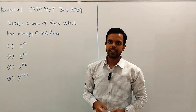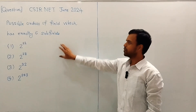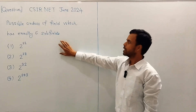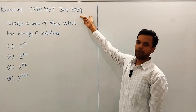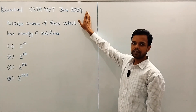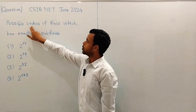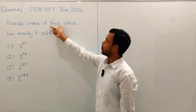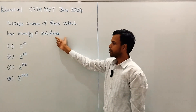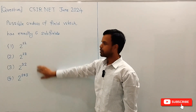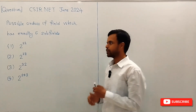Hello everyone, I am Aakash. In this video, I will discuss a solution of an interesting question on ring theory which was asked in the recent CSIR NET June 2024 exam. The exam was conducted yesterday, so this is a memory based question. The question is: find the possible orders of a field which has exactly 6 subfields.